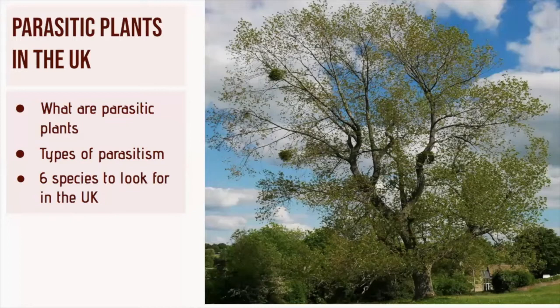Some are entirely parasitic on other plants while others are sometimes parasitic. We'll take a look at six different species you may come across in the UK, with some more well known than others — such as in the photo here with the mistletoe and the big bunches on the branches of this black poplar tree.